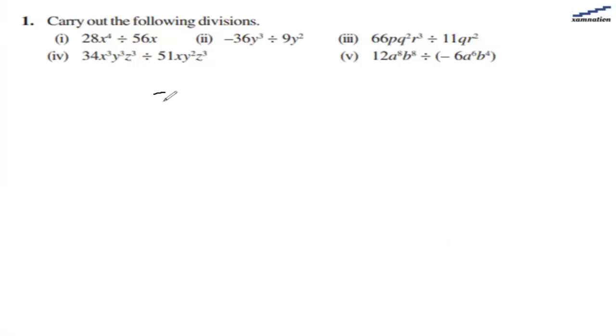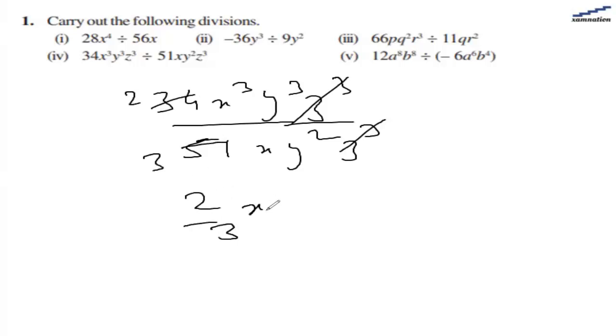In the fourth part we have 34x cubed y cubed z cubed divided by 51xy squared z cubed. Z cubed and z cubed cancel, and y cubed and y squared, so we are left with y only. With x we are left with x squared. We have 17 as the common factor, giving us 2 and 3. The answer is 2 by 3, x squared and y.